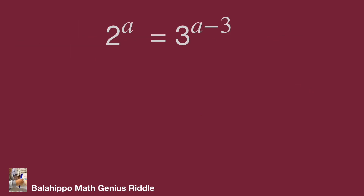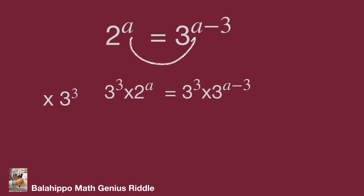The question is 2 power of a equal to 3 power of a minus 3. I'm going to handle the power of a in both sides of the equation. So I multiply 3 cubed to both sides of the equation to generate 3 power of a. Then we have 3 cubed times 2 power of a equal to 3 cubed times 3 power of a minus 3. Eliminate 3 cubed on the right side of the equation. Then we have 3 cubed times 2 power of a equal to 3 power of a.